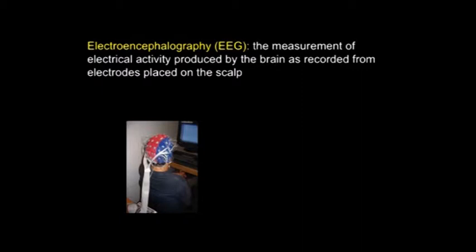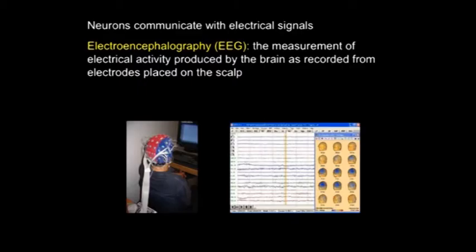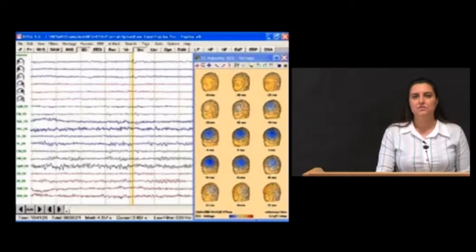And it is that electricity, those electrical signals, those electrical pulses that we are actually recording with electroencephalography. So basically we use head electrodes that are mounted on a cap to record the electrical activity from our brain, and that can give us information about processing in the brain.